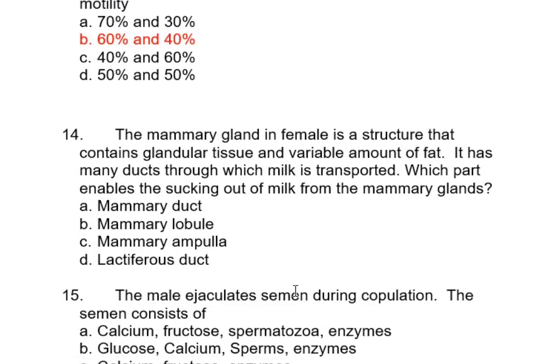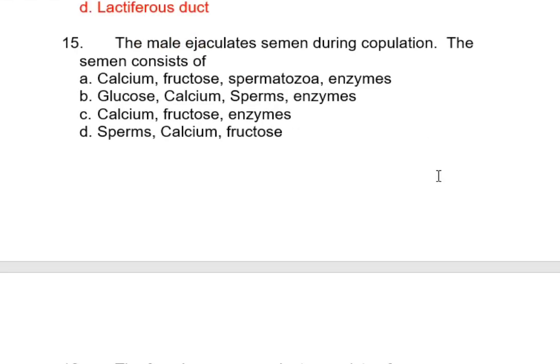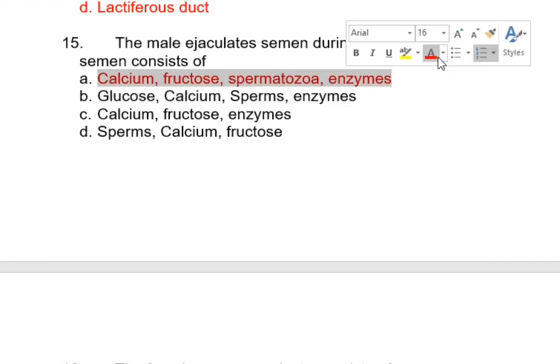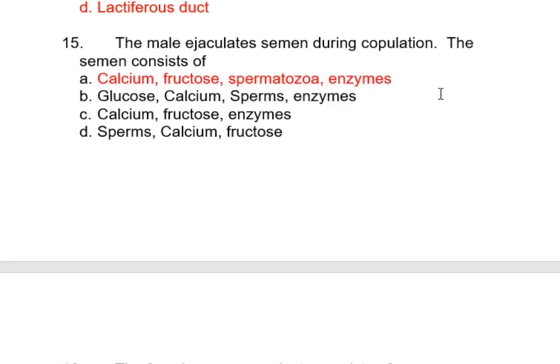The mammary gland in females is a structure that contains glandular tissue and a variable amount of fat. It has many ducts through which milk is transported. The part that enables the sucking out of milk from the mammary glands is the lactiferous duct. During copulation, semen is a combination of sperm and seminal plasma, which consists of calcium, fructose, and enzymes.